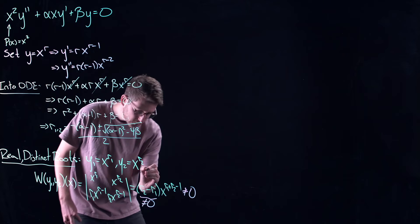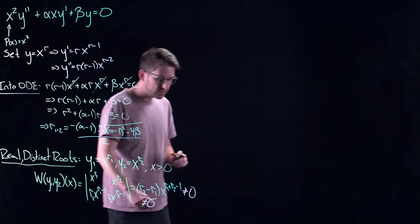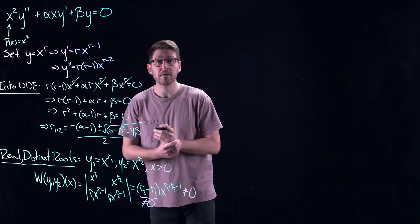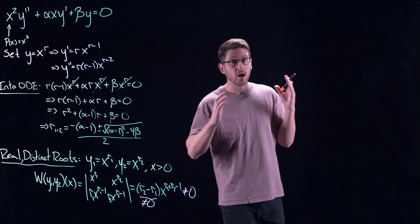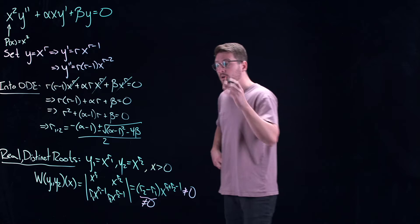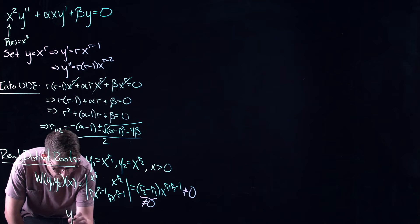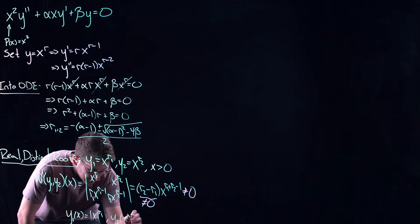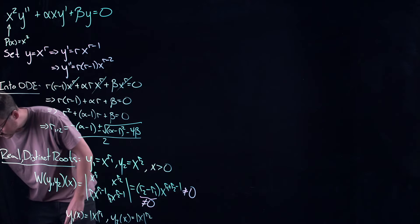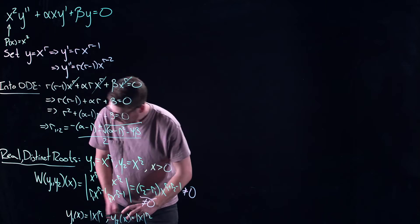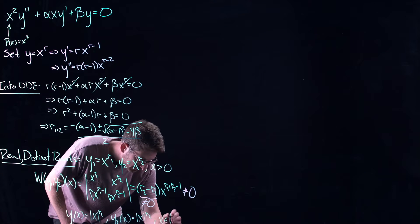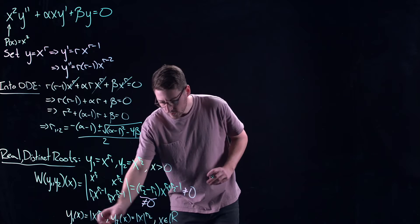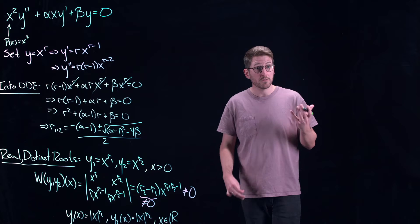There is a small nuance: this is only valid for x positive, because we could have non-integer powers like r one equal to one half, causing issues with negative x. We can extend the solutions by writing y one of x equals the absolute value of x to the r one, and y two of x equals the absolute value of x to the r two. This extends the solutions over all real numbers, ensuring we have real-valued functions without taking square roots of negative numbers.